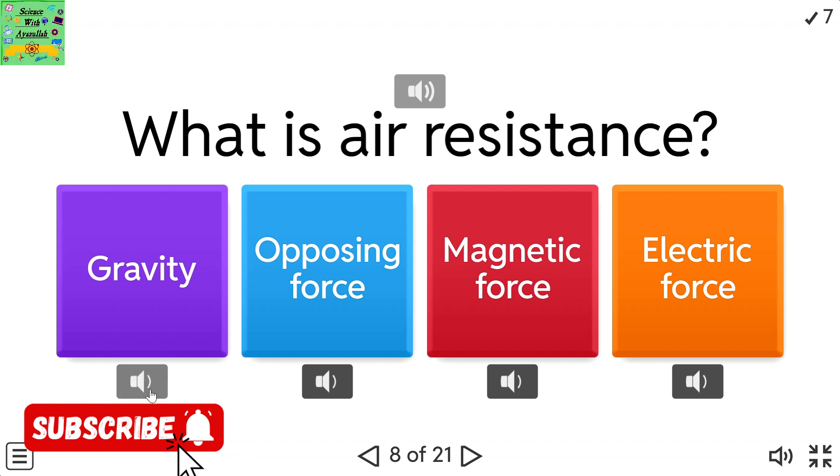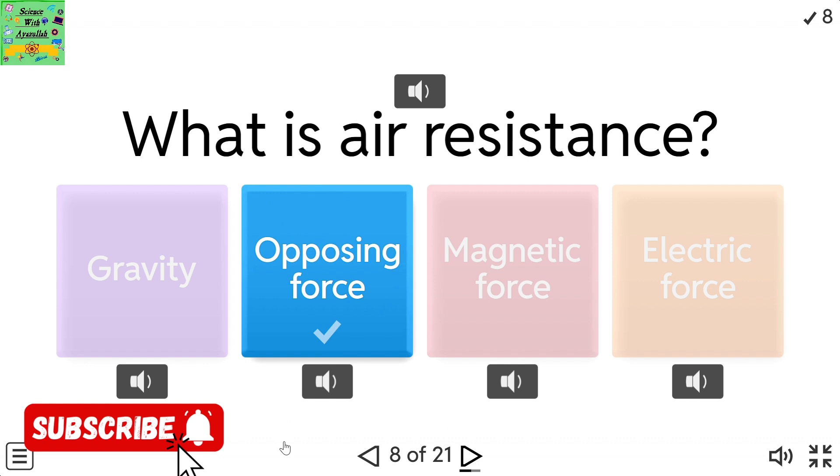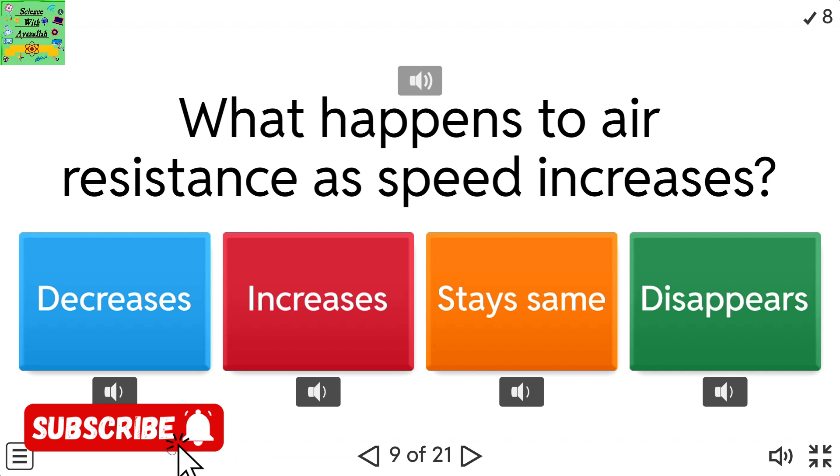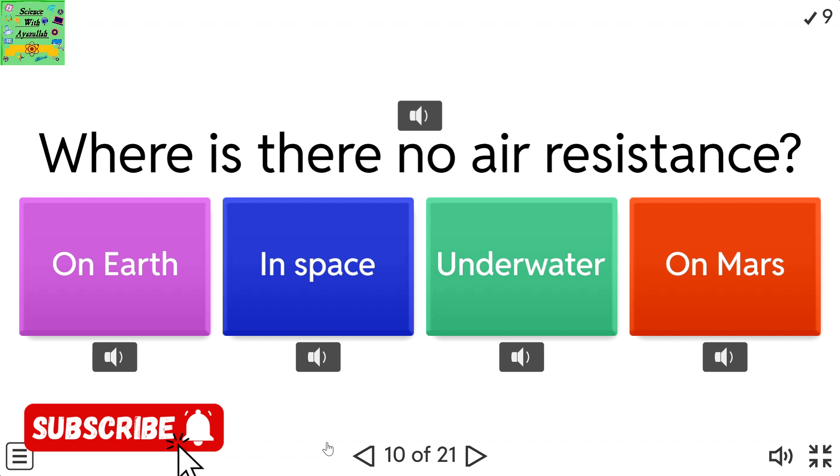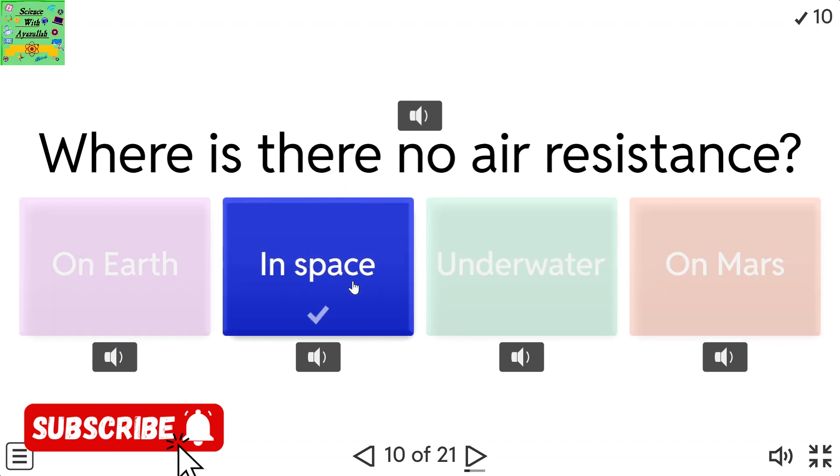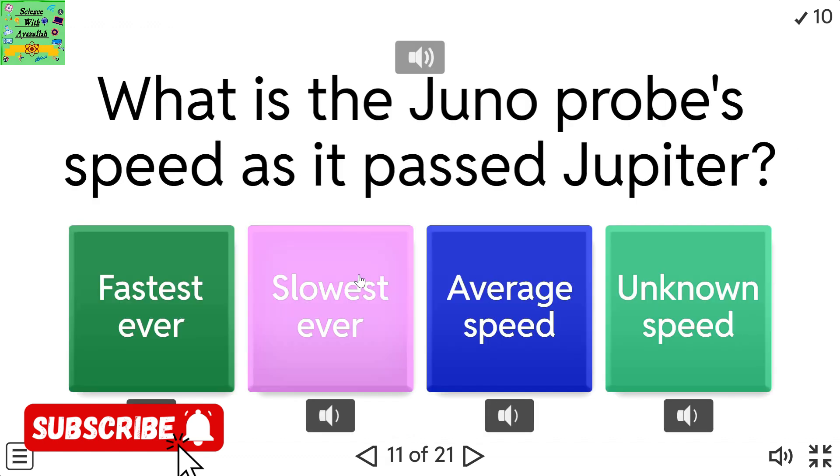What is air resistance? Gravity, opposing force, magnetic force, electric force. What happens to air resistance as speed increases? Decreases, increases, stays same, disappears. Where is there no air resistance? On Earth, in space, underwater, on Mars.